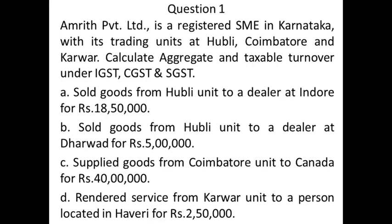Transaction 2: Sold goods from Hubli unit to a dealer at Dharwad for Rs. 5,00,000. Hubli is in Karnataka, and Dharwad is also in Karnataka. Therefore, this is an intra-state transaction. It will be included in aggregate turnover, and for taxable turnover it comes under CGST and SGST in Karnataka.